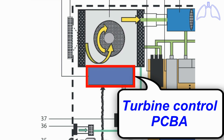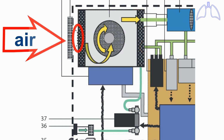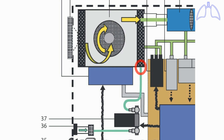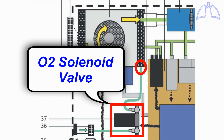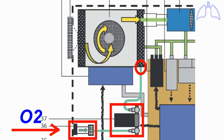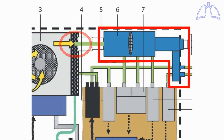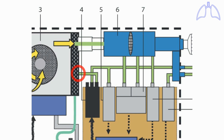The turbine control PCBA controls the turbine. The turbine has two inputs and two outputs. The first input is used to insert air from the atmosphere. The second input is connected to the oxygen solenoid valve, which receives oxygen from the low-pressure oxygen inlet. The first output is connected to the inspiratory block. The second output is connected to the exhalation solenoid valve.